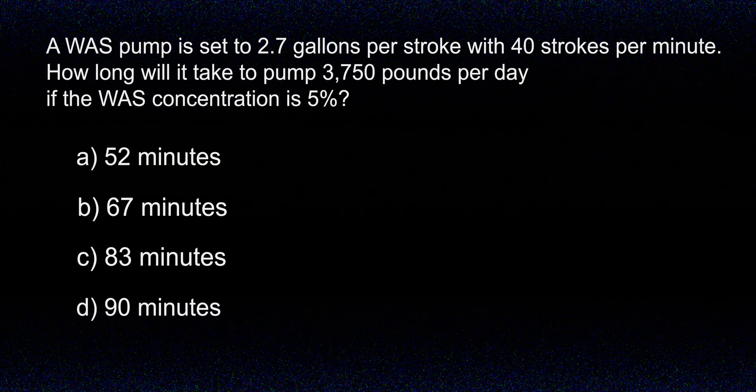A WAS pump is set to 2.7 gallons per stroke, with 40 strokes per minute. How long will it take to pump 3,750 pounds per day if the WAS concentration is 5%? A. 52 minutes. B. 67 minutes. C. 83 minutes. D. 90 minutes.